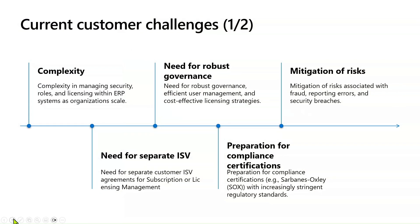As we look at the current challenges customers face, it is evident that complexity is a significant barrier. Organizations struggle with managing security roles and licensing as they scale. Additionally, the need for separate ISV agreements complicates subscription management. Robust governance is essential to mitigate risk associated with fraud and compliance failure, specifically with regulations like SOX becoming more stringent.